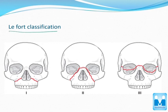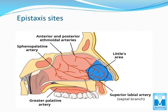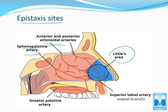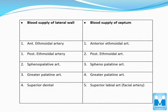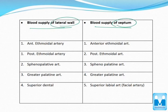This is the Le Fort classification — we have to know this classification and the clinical features. This is the epistaxis topic — the arteries which supply the area, the arterial areas and plexuses. The names and locations you have to know. This is the arterial supply of the lateral wall and the septum.